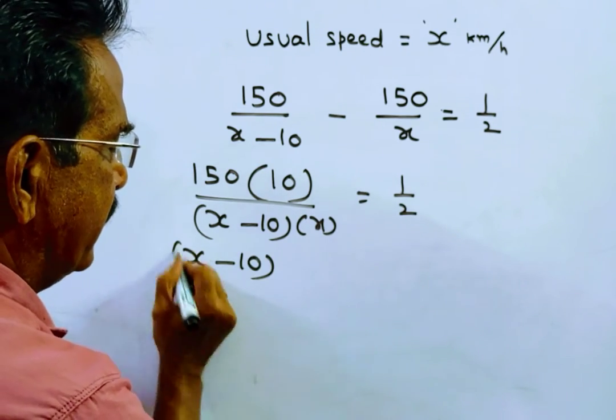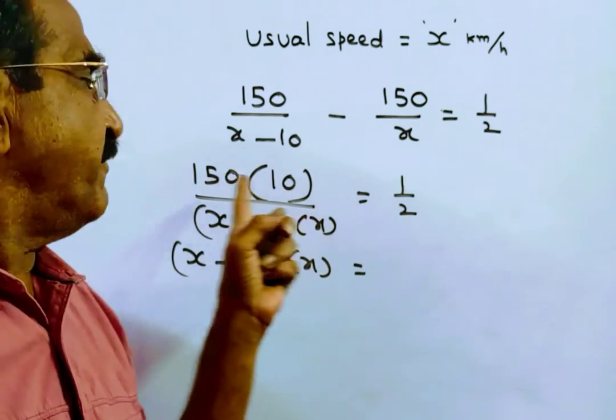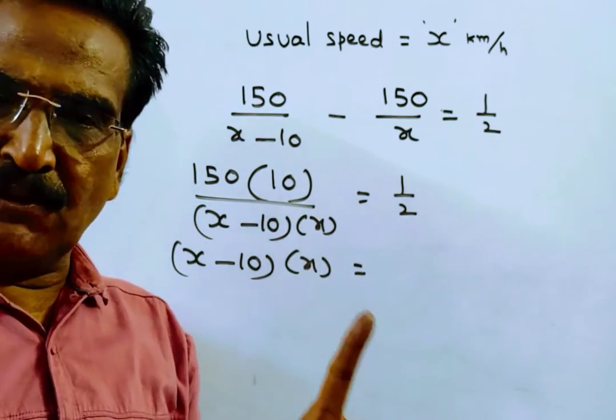This implies (x-10)×x = 2×150×10, which equals 300×10 = 3000.